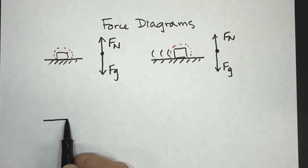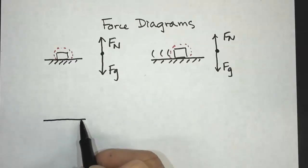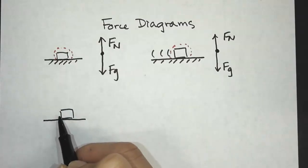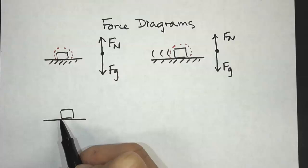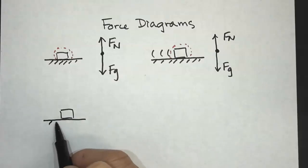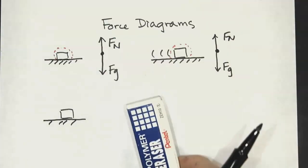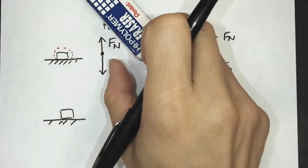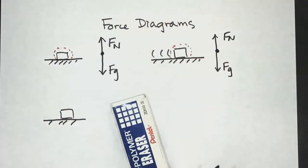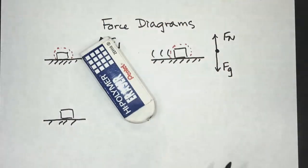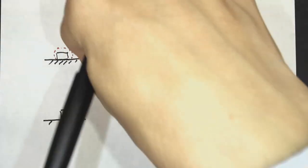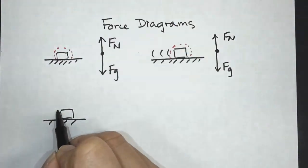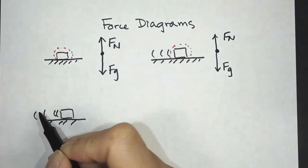Now let's take a look at another example. This time we have an object that is moving but slowing down due to kinetic friction. An example would be like this eraser — it's moving, but it slows down because of kinetic friction. After it leaves my finger, there is kinetic friction acting in the opposite direction, so it is slowing down.